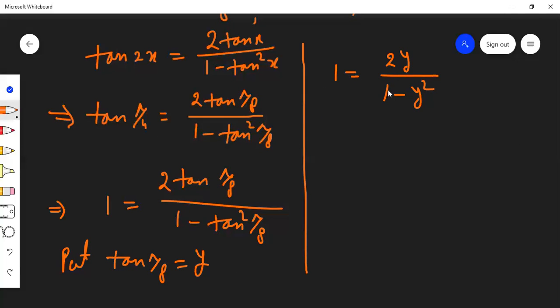Cross multiplying, we get 2y equals 1 minus y². Taking all terms to one side, we get the quadratic equation y² + 2y - 1 = 0.